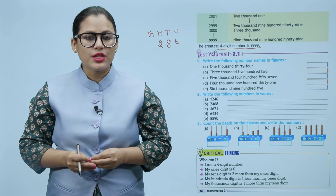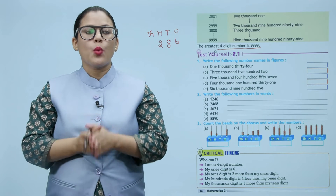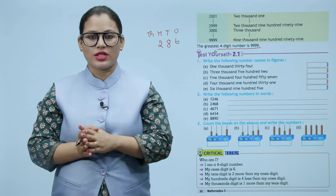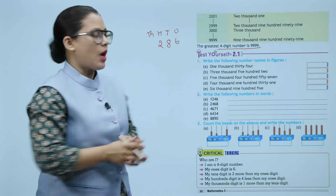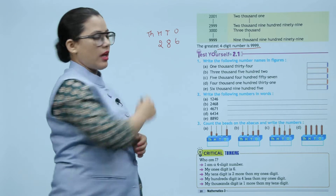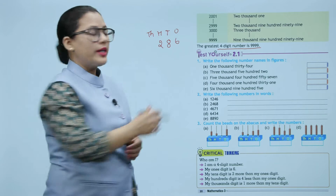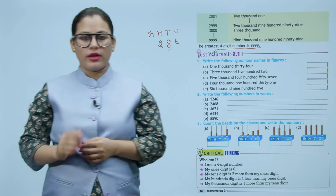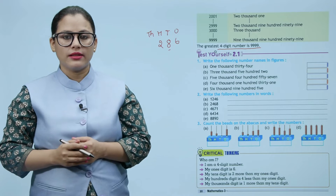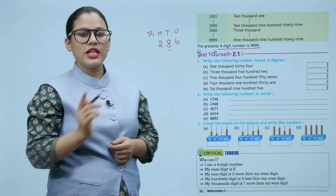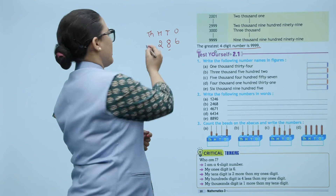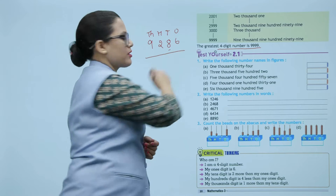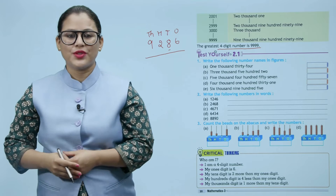My thousands digit is one more than my tens digit. Yani eight plus one equals nine. So here is the required number — nine thousand eight hundred twenty six (9826).